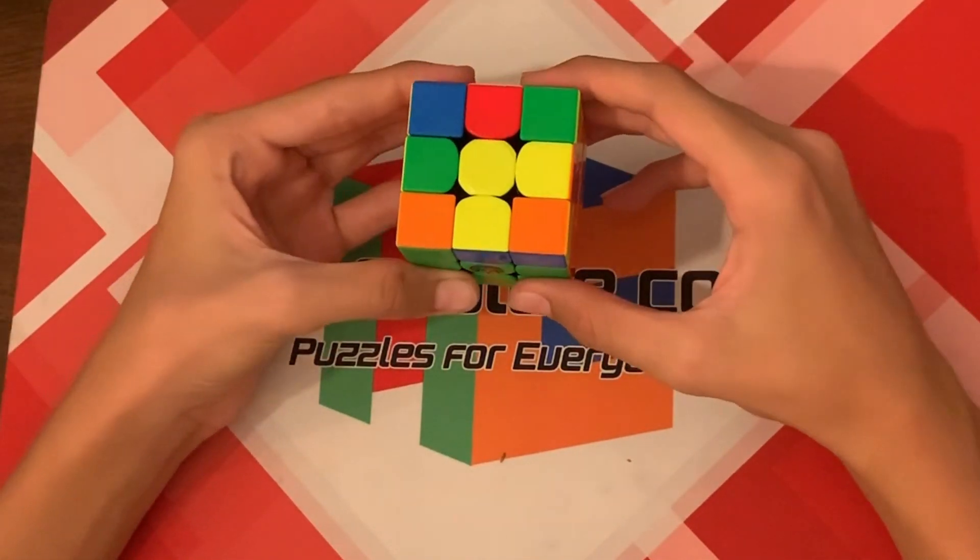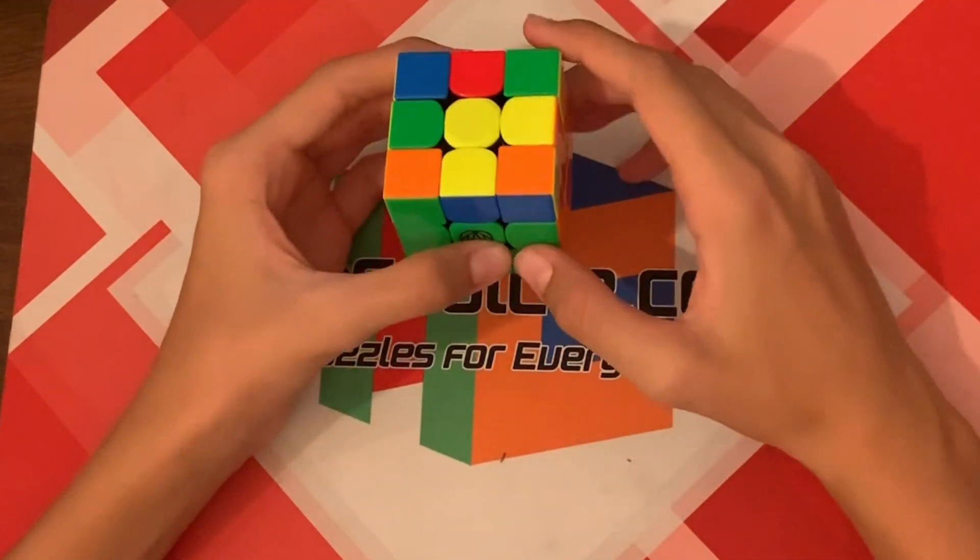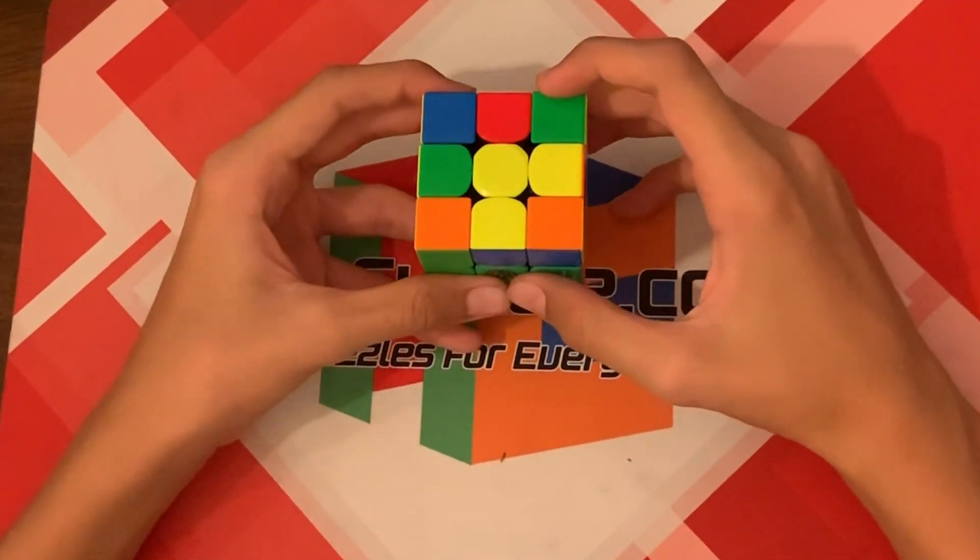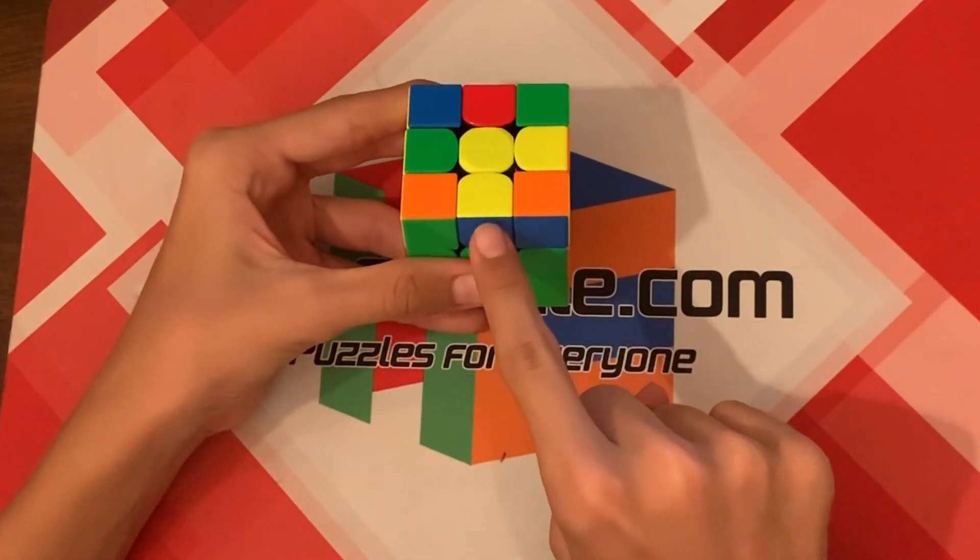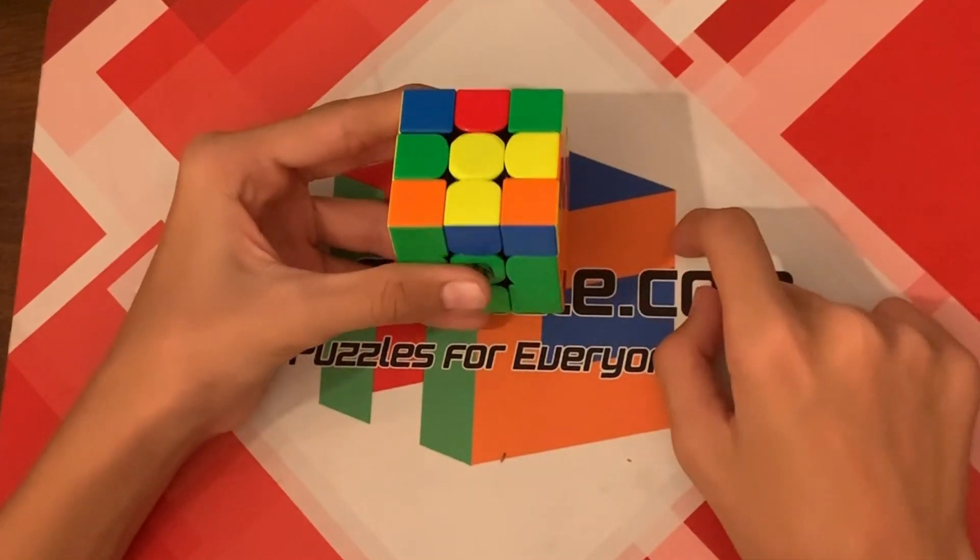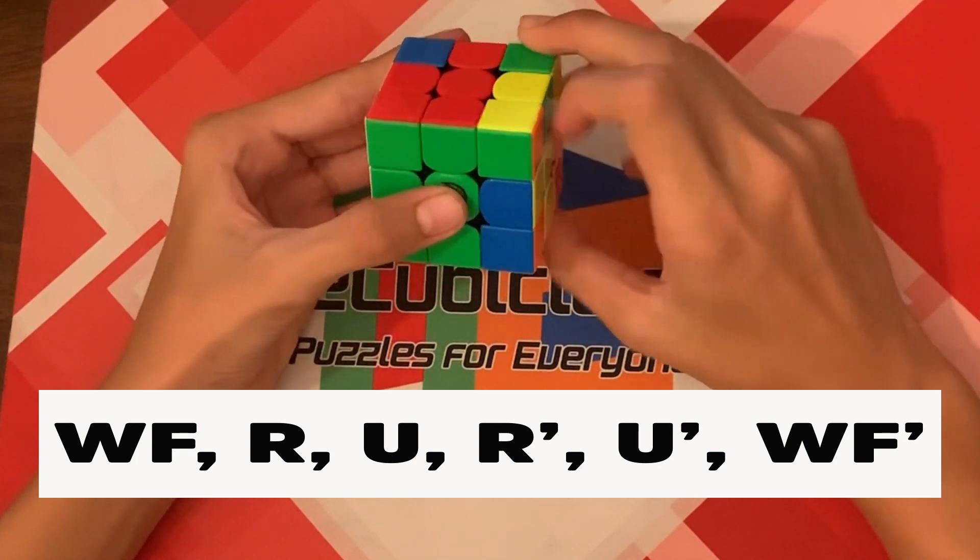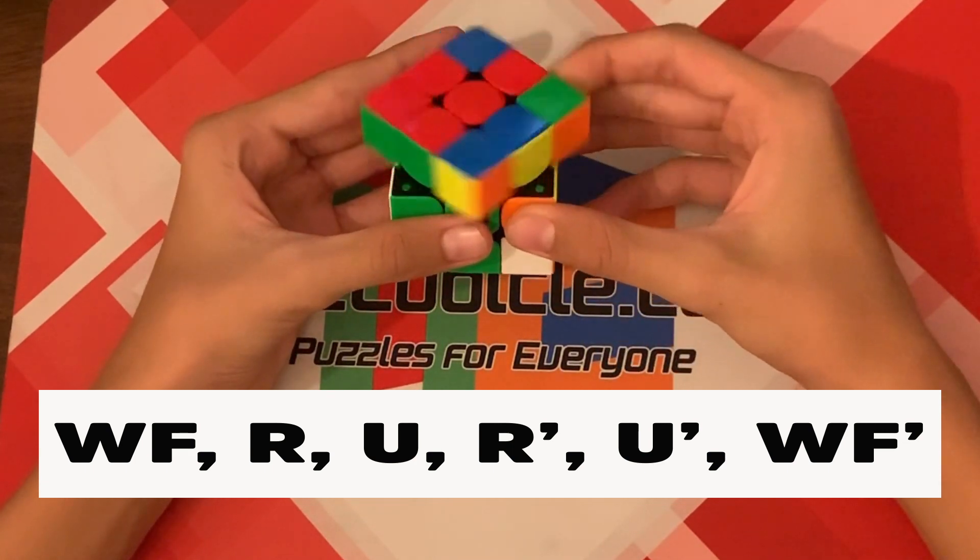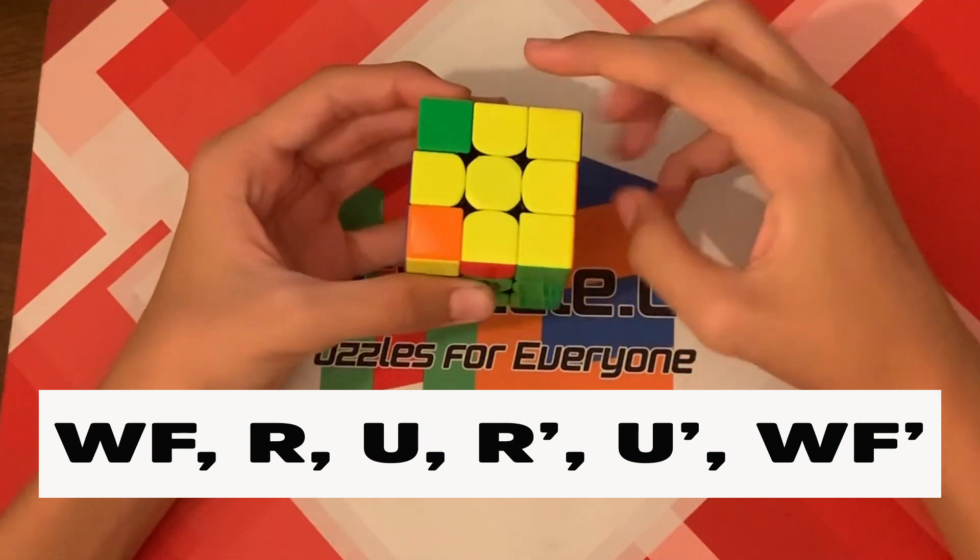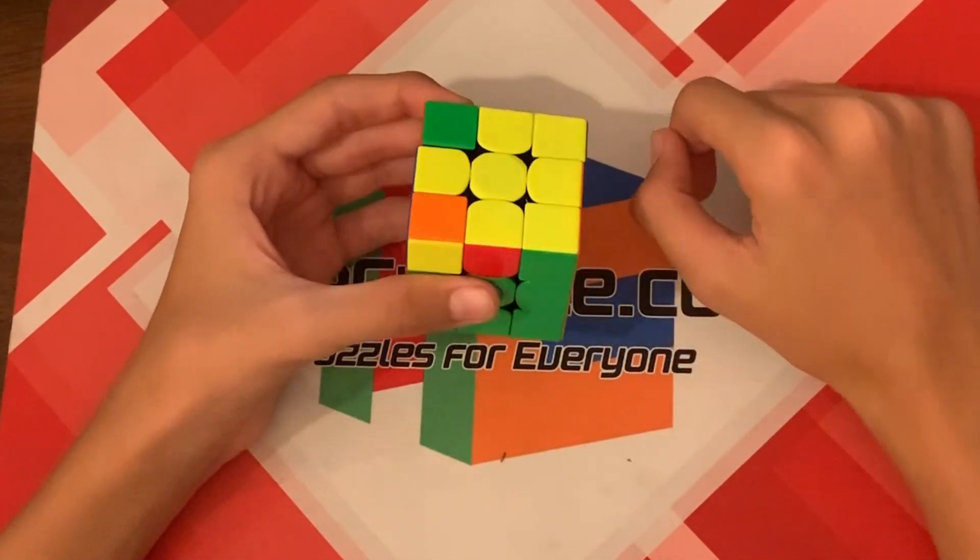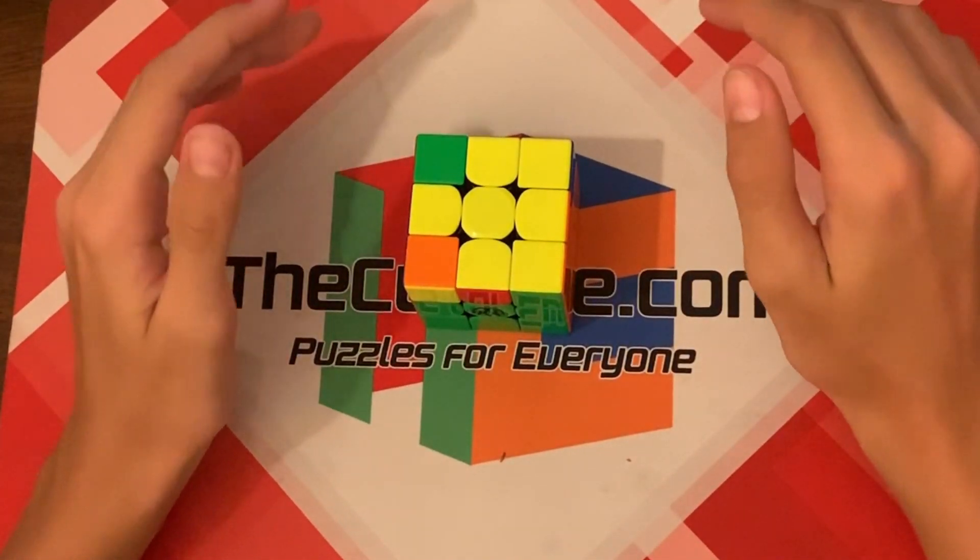And now the last case you could have would be if you have an angle like this, and you want to hold it so that way one of the edges is facing you, it's right in front of you, and one that's to the right of you, like this. Then you're going to do the algorithm, wide F, R, U, R prime, U prime, wide F prime. And then you will have the yellow cross.